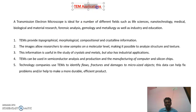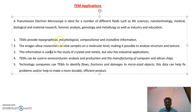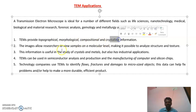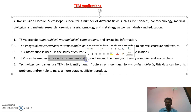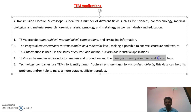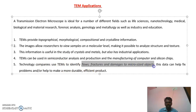The TEM applications include analysis of morphology, composition, and crystalline information of particular samples. It allows researchers to view samples at the molecular level and is used for further studies of crystals and metals in industries. TEM is used for semiconductor analysis, especially in the manufacture of computers and silicon chips. It is also used to identify flaws, fractures, and damages in micro-sized objects. These are the important principles and applications of SEM and TEM.